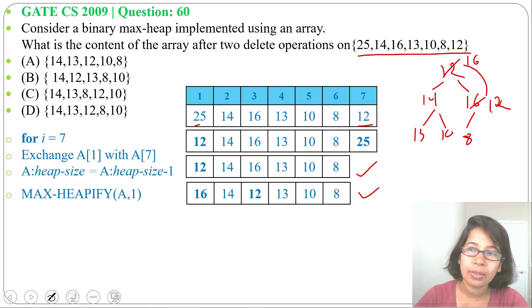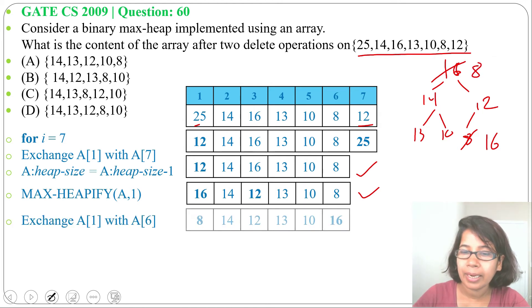So again we'll exchange root with the last node. So root is 16 that will exchange with 8. So here will be 16, here will be 8.